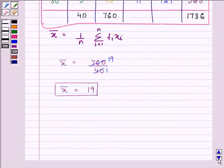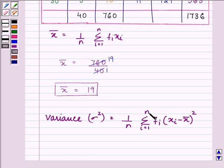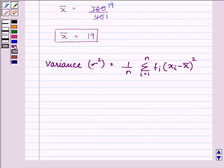So the next step is to find out the variance. So we have variance that is standard deviation square equals 1 upon n summation fi into xi minus x bar the whole square where i equals 1 till n. So on substituting the values we have the summation of fi into xi minus x bar the whole square found out above as 1736. So we have 1736 divided by the total of frequency that is 40. So we have the answer as 43.4.